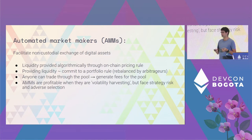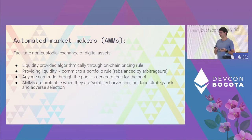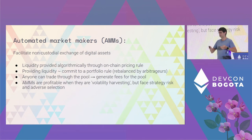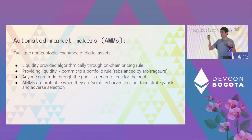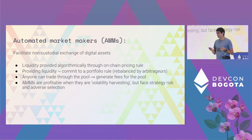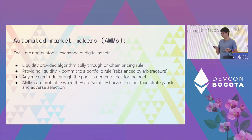Once liquidity is provided, people can trade through the pool, generating fees. This is typically profitable in cases of volatility harvesting — if the price moves up and down around some level. If the price consistently diverges, it may not be profitable. There are also strategy risk and adverse selection risk involved with AMMs.